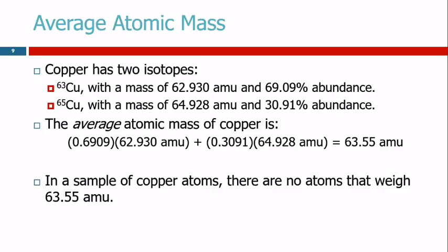So to find the weighted average, we take this 69.09%, we divide by 100. So that gives us 0.6909. And we multiply by the mass of that isotope.